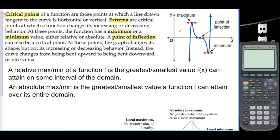We call that concavity. At maximums or minimums, we can draw a tangent line that is horizontal to the curve. Another critical point is called a point of inflection, where it goes from being concave up to being concave down. A relative max or min of a function f is the greatest or smallest value f of x can attain on some interval of the domain. An absolute max or min is the greatest or smallest value the function f can attain over its entire domain.